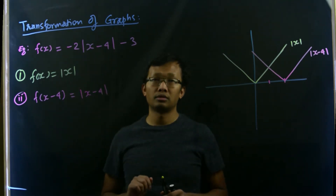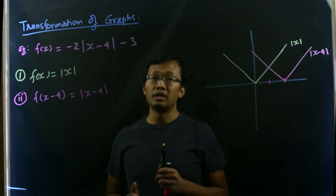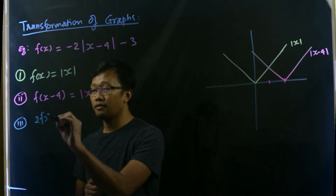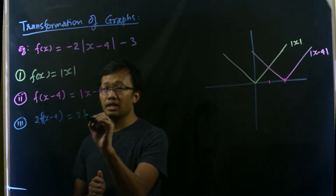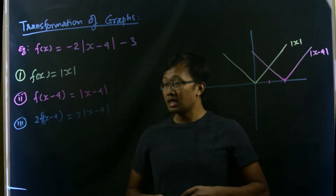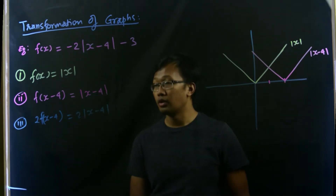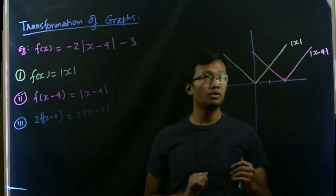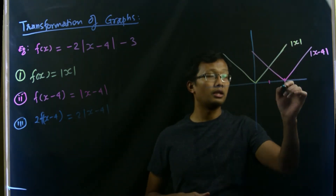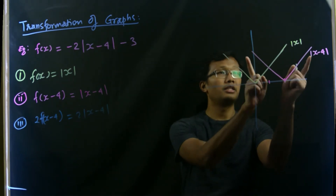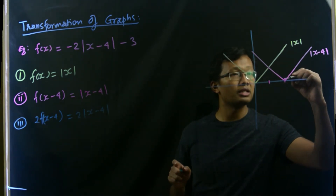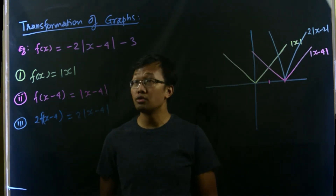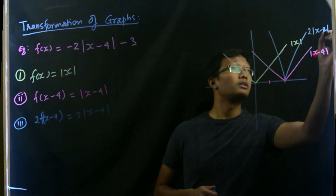Next we address the negative 2. First, let us multiply by 2: that gives 2 times f(x minus 4), which is 2 times the absolute value of x minus 4. Multiplying by 2 means we stretch the function towards the y-axis, so the two arms of the V get closer to the vertical axis. Our graph would look narrower — this is twice the absolute value of x minus 4.